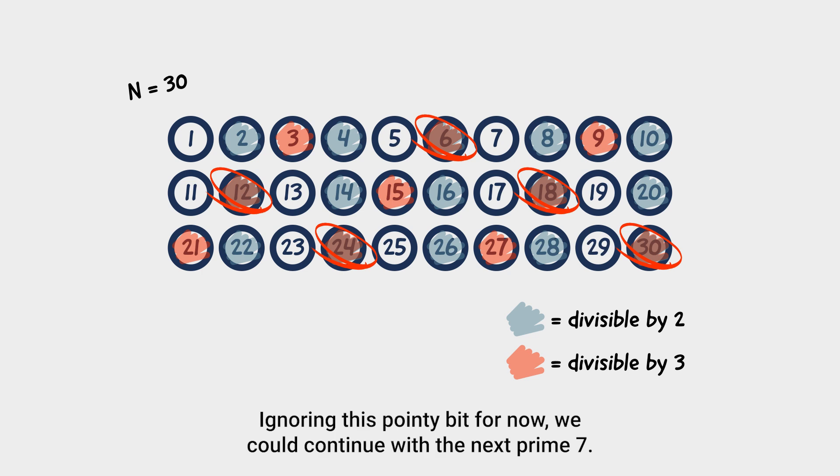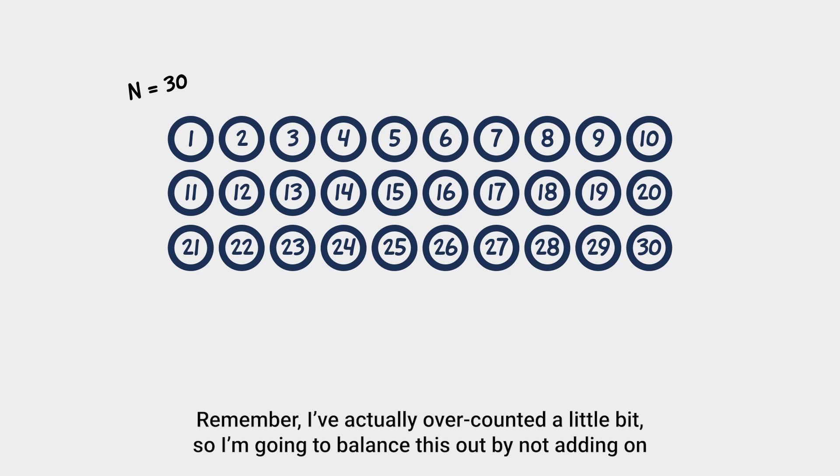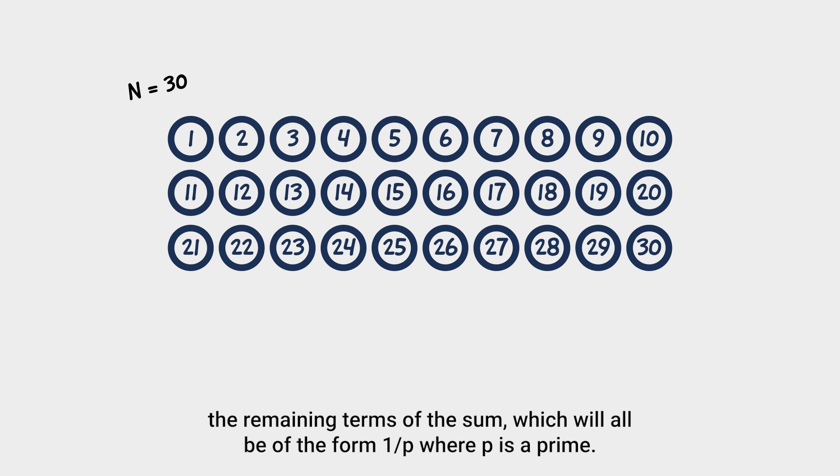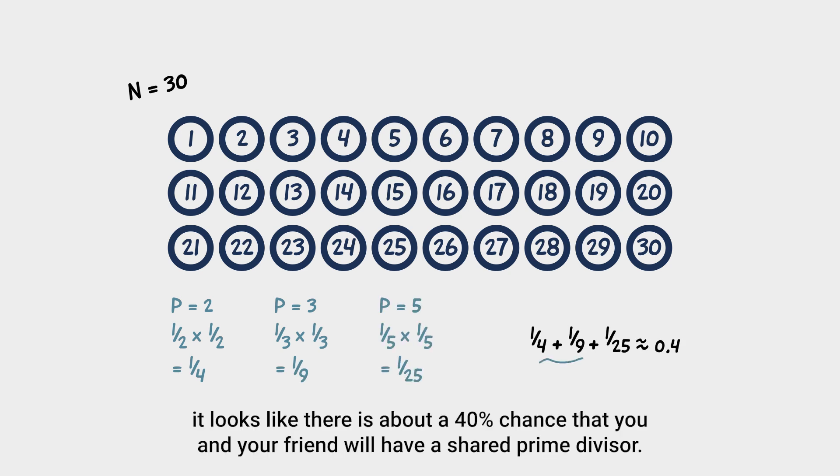Ignoring this pointy bit for now, we can continue with the next prime, 7. But I won't. Remember, I've actually over-counted a little bit. So I'm going to balance this out by not adding on the remaining terms of the sum, which will all be of the form 1 on p squared, where p is a prime. Doing the arithmetic, it looks like there is about a 40% chance that you and your friend will have a shared prime divisor.